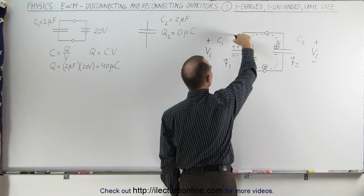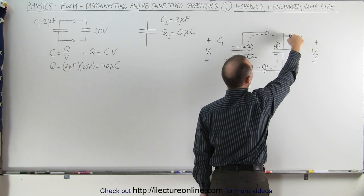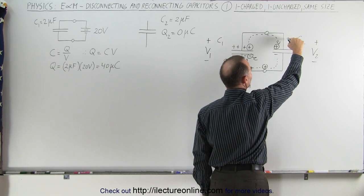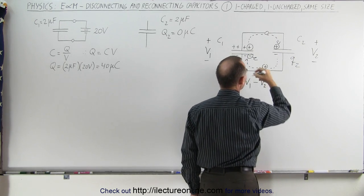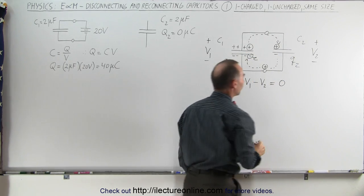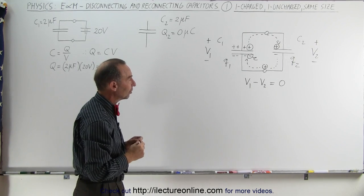So going across this capacitor from here to here, that's a positive V1, and then going across the capacitor over here from the positive to negative, that would be negative V2, and when you add them together, you get zero. So that's one thing you do know, that if you go all the way around the circuit, all the voltages must add up to zero.